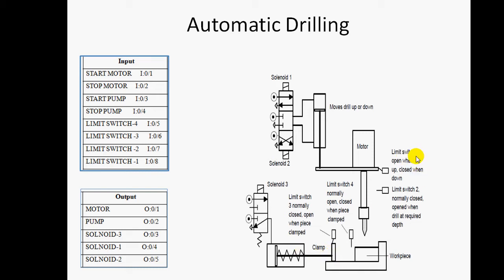Solenoid valve three is for clamping purpose. We also require four limit switches. Limit switch one identifies the drill-up position. Limit switch two identifies the required drilling depth. Limit switch three identifies the unclamp position of the workpiece, and limit switch four is for clamping of the workpiece.